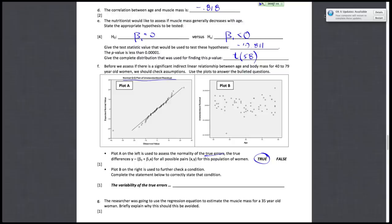And it says that plot B on the right is used to further check the condition. Complete the statement below to correctly state that condition. Well, what we have here are the residuals on the y-axis. And we're checking to see them over age. So when we do a plot of the residuals, what we're doing is to see if the true errors are constant and that they're not changing over time. We want to see if they follow a horizontal band evenly around zero. So what we're checking to see is that the true errors are constant, should be constant. They don't change over time.